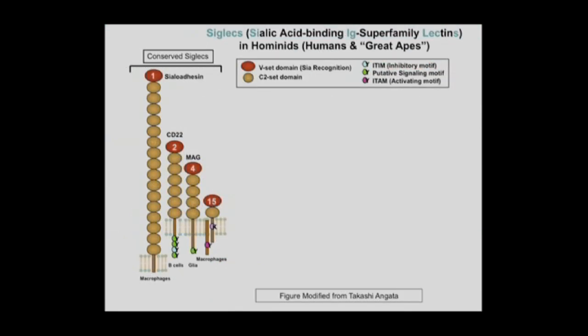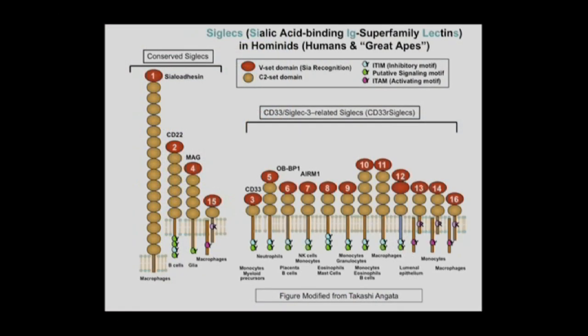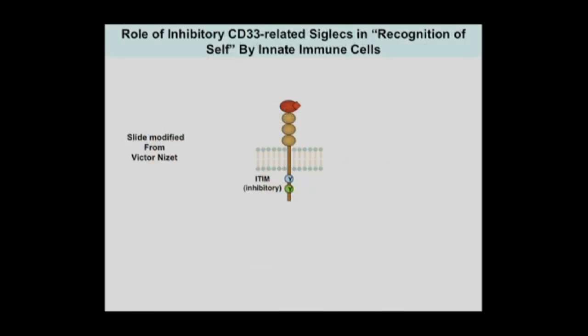Looking more closely at the siglecs: there are some conserved ones — four of them present from at least all mammals — which I won't go into as much. We're focused on the subset called CD33-related siglecs, which are rapidly evolving in all taxa, particularly in humans. We and others have been able to clone most of these, and we think we've found almost the last one in the genome.